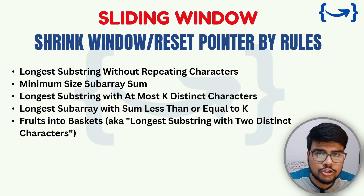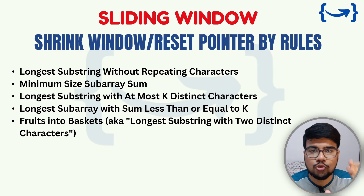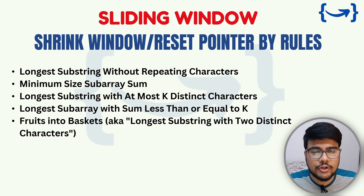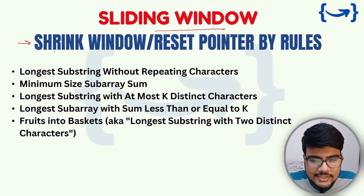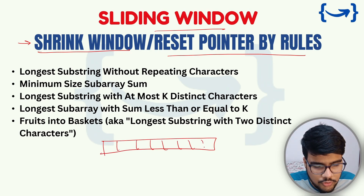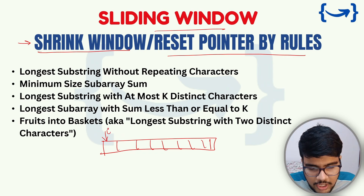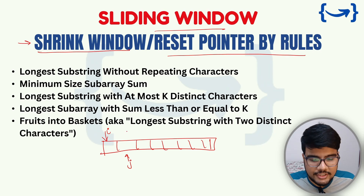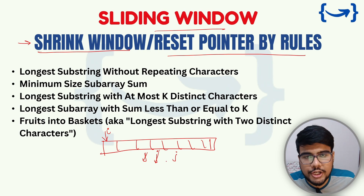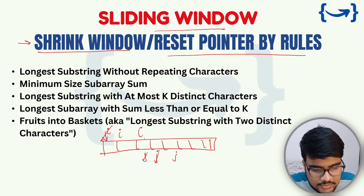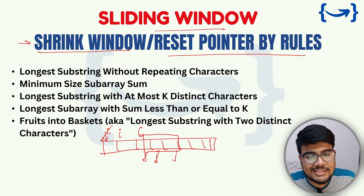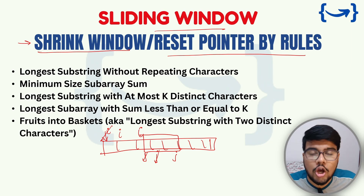You might wonder how many patterns we have — we have only four patterns that I found by researching throughout TCS, NQT, and prime role interviews. These are the four patterns you need to thoroughly prepare. Sliding window, which is one type, uses a shrink window and reset pointer by rules. You place your i-pointer and j-pointer, and until your condition is satisfied you increase the window size. When your sum is greater than needed, you decrease the window size. Maintaining this window throughout traversals is basically a sliding window approach.